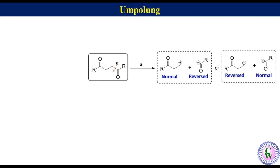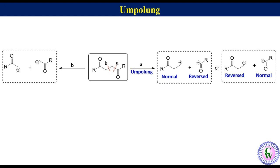So both these approaches will be umpolung approaches. If we disconnect another bond, it gives two fragments: one with positive charge on the carbon alpha to the carbonyl, and another with negative charge on the carbon alpha to the carbonyl — an enolate. The cationic fragment has reversed polarity while the anion has normal polarity. Since one of the two fragments has reversed polarity, this approach will also be an umpolung approach.